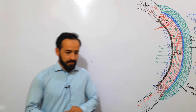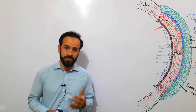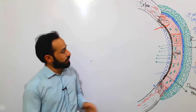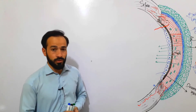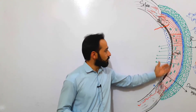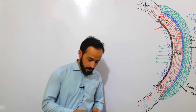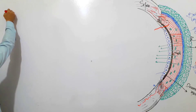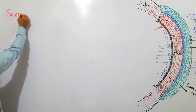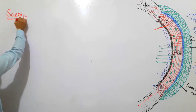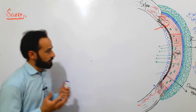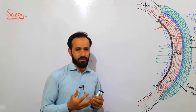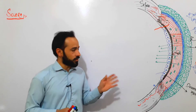Assalamu alaikum dear friends and students. We have started to discuss the structure of the human eye. In the previous lecture we discussed the structure of the cornea in detail — its composition, parts, and layers. I hope you watched those lectures and have knowledge of the cornea. Now we are going to discuss the structure of the sclera.